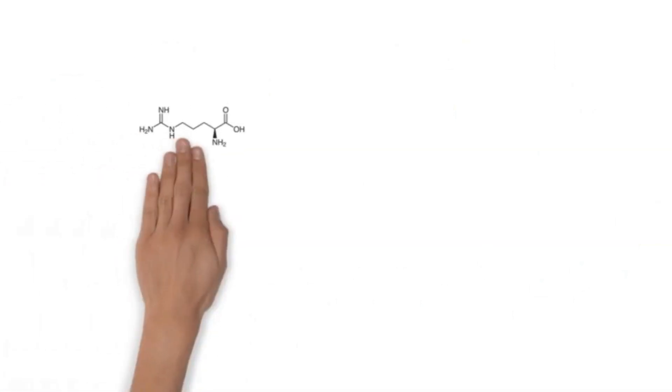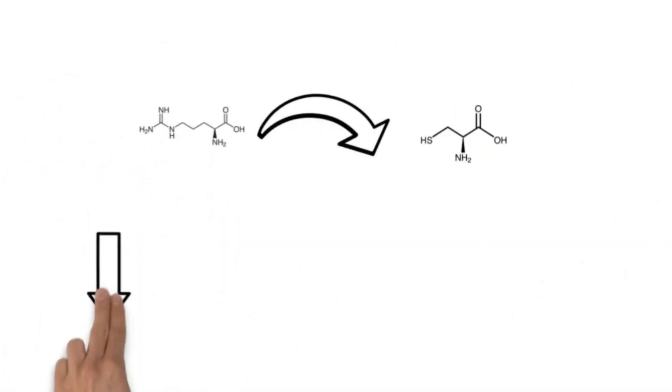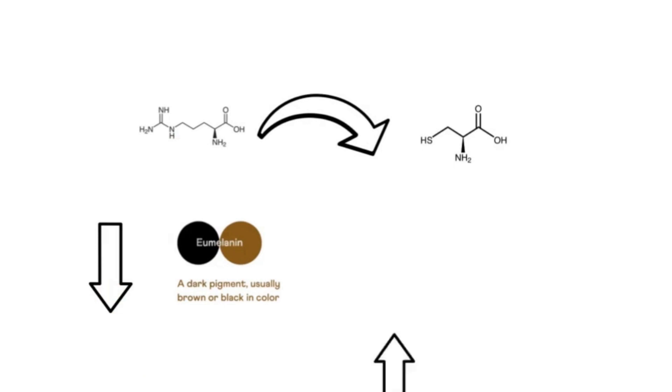This change, from arginine to cysteine, leads to decreased eumelanin production and increased pheomelanin, the red to yellow pigment that gives redheads their distinctive hue. And this change also contributes to their fair skin.